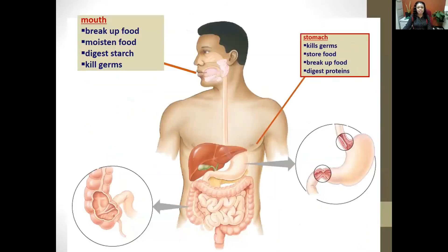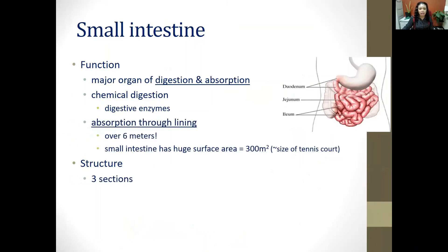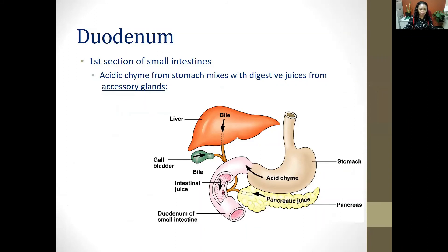The small intestine is the major organ of digestion and absorption. It consists of three main parts: the duodenum, the jejunum, and the ileum. Most digestion in the alimentary canal actually takes place in the small intestine, and absorption also occurs there. Food leaves the stomach and enters the duodenum where a lot of digestion takes place. The ileum completes any final digestion, but its main function is absorption, and it is well adapted for this. Acidic chyme from the stomach mixes with digestive juices from the pancreas.